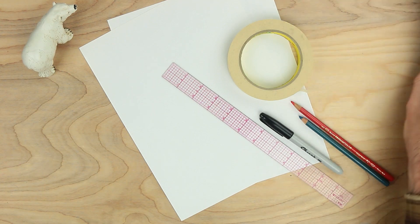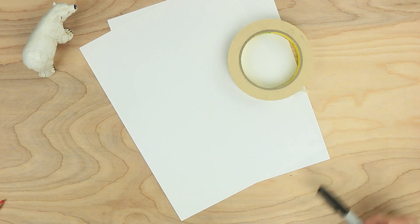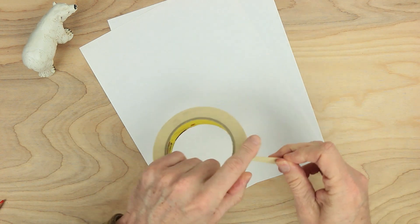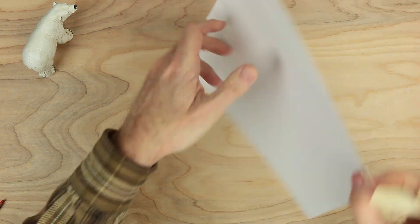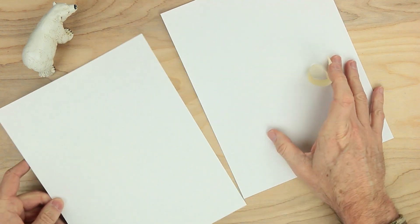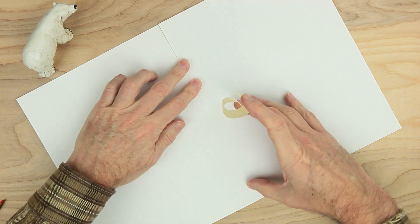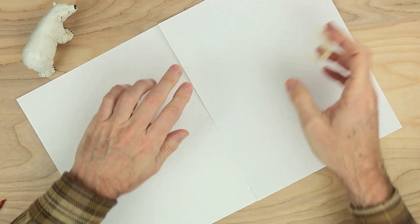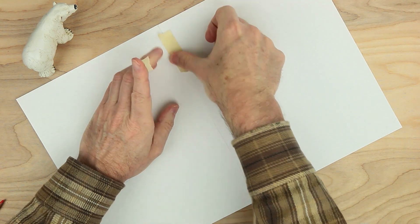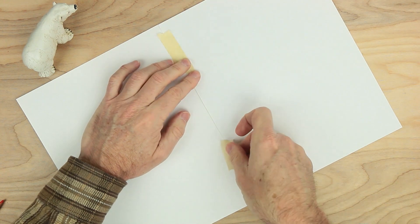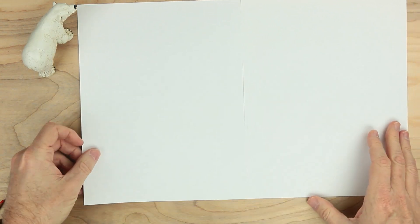So let's get started. We're going to start with just the tape and the paper. Just a little bit of tape. And what I want to do is take the two sheets of paper and tape them together like so. Line them up as well as you can. And I'm going to tear this in two pieces.